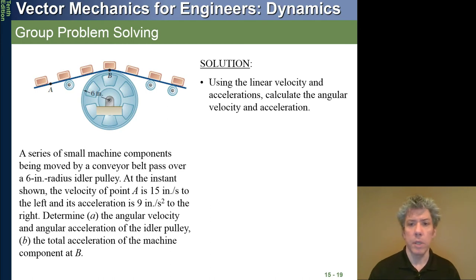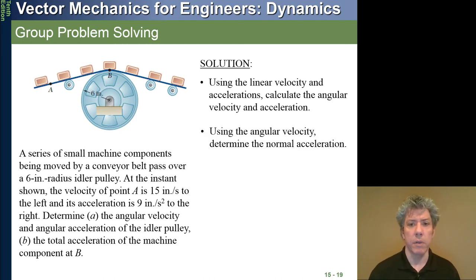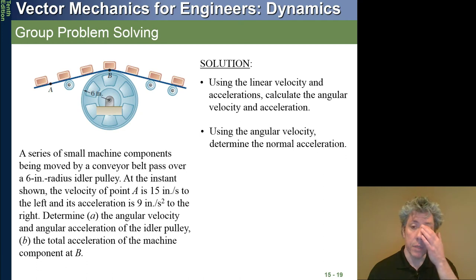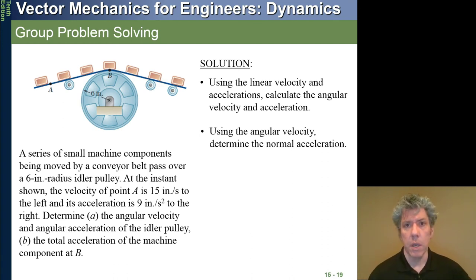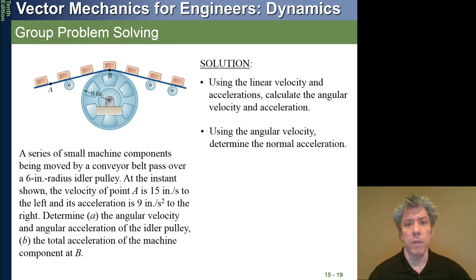The solution using linear velocity and accelerations: calculate the angular velocity and acceleration. To find the normal acceleration using angular velocity, wouldn't that be a V-squared-over-rho calculation? To calculate normal acceleration, it's always the tangential velocity squared over rho. So you take 15 inches per second squared divided by 6 inches - that's the normal acceleration.